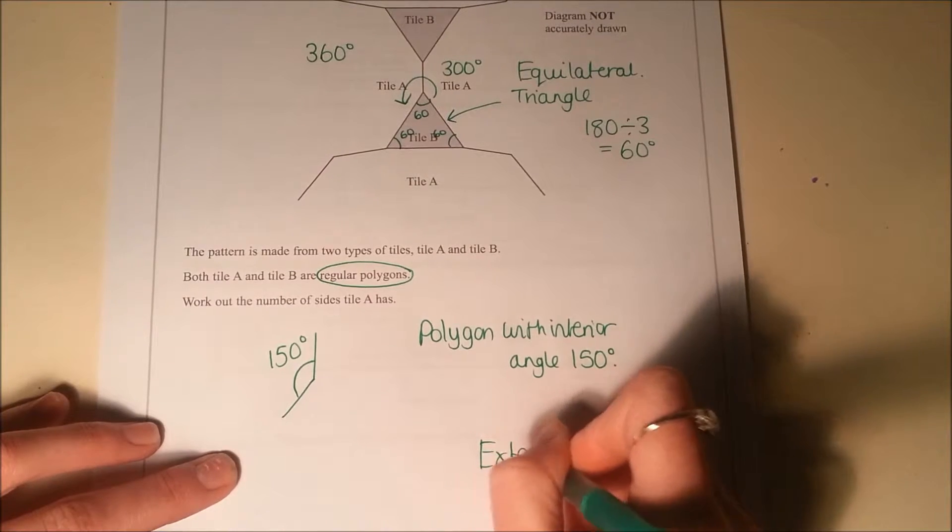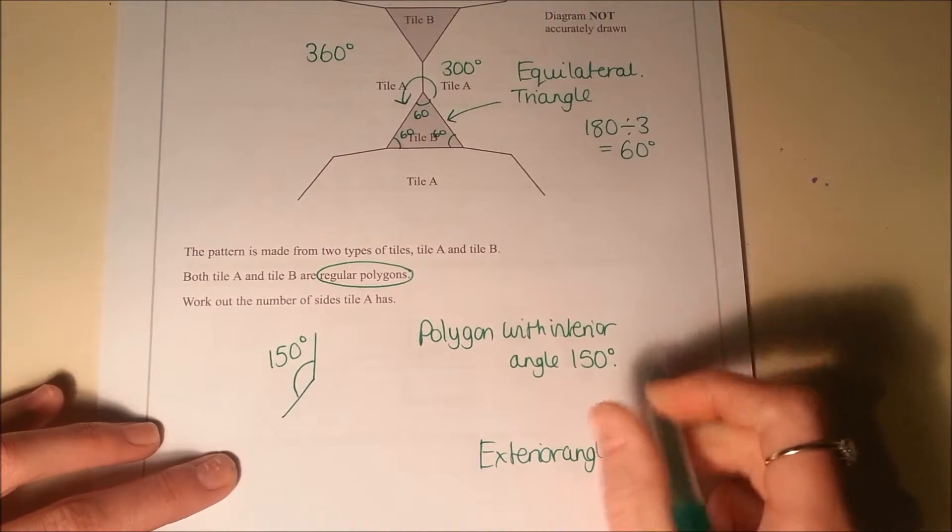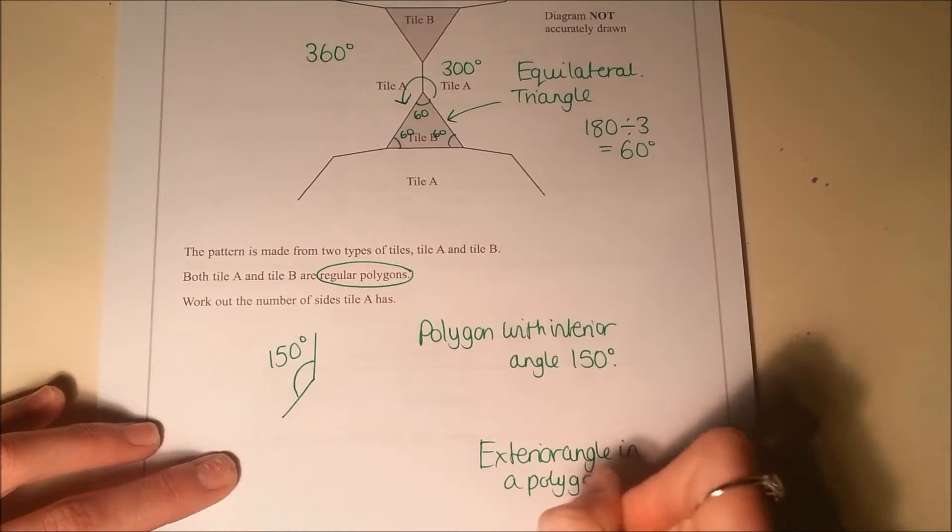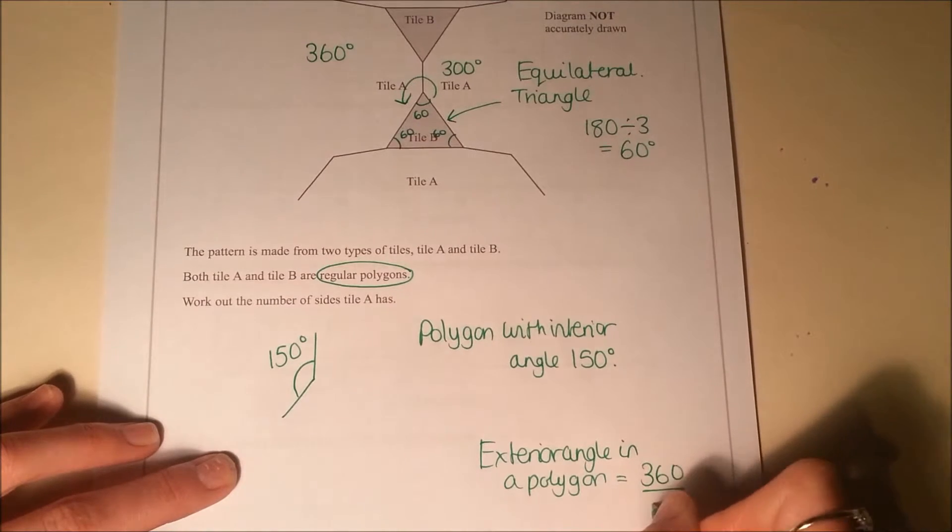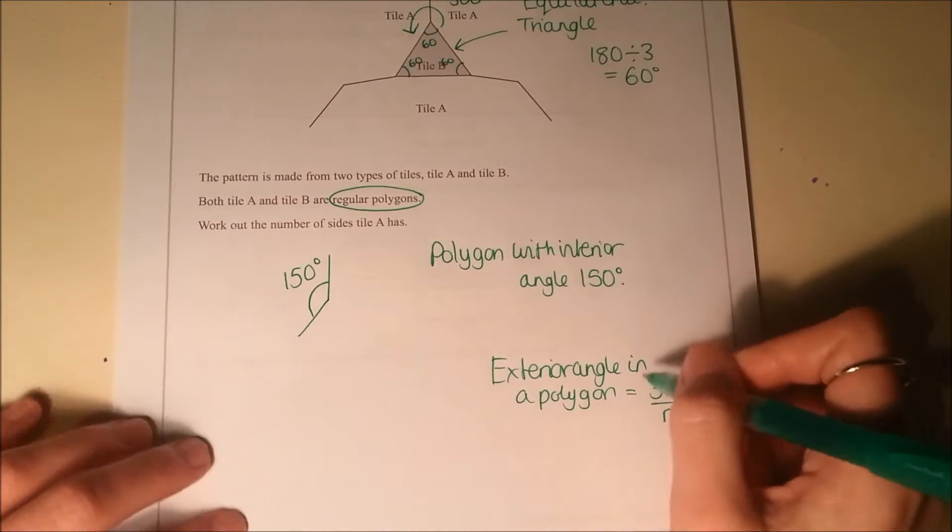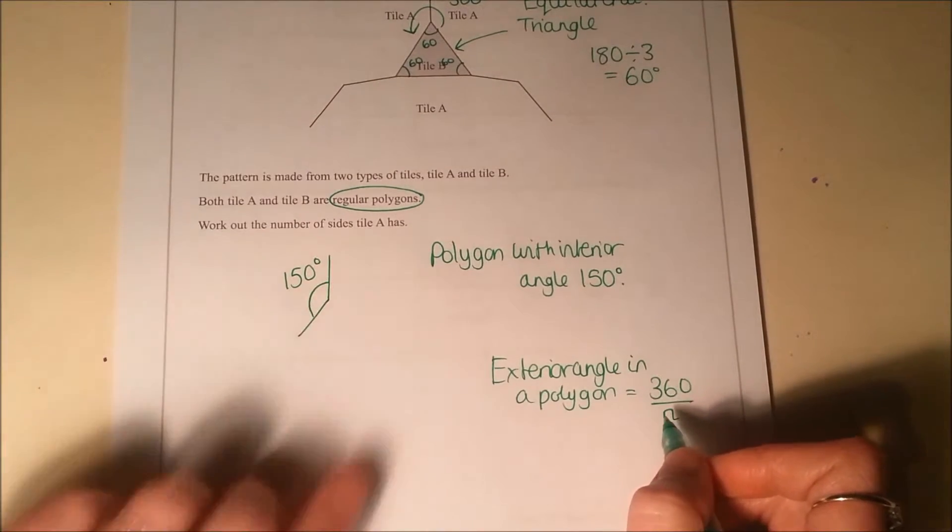So exterior angle in a polygon is 360 divided by the number of sides. So we can start to see how we could use this to try and work out the number of sides that A has.